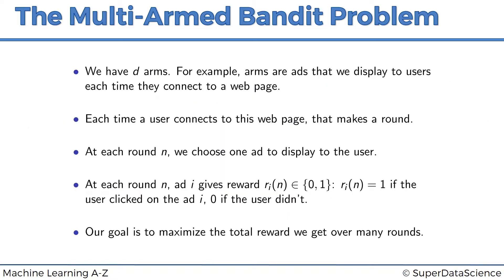Here's a quick summary of the multi-armed bandit problem. We have d arms — for example, arms are ads that we display. Each time a user comes to a web page and an ad is displayed, that's a round. For each round n, we choose which ad to display; you can only display one ad at a time. At each round n, ad i gives a reward: r_i(n) equals 1 if the user clicks on the ad and 0 if they don't. Our goal is to maximize total reward over many rounds.